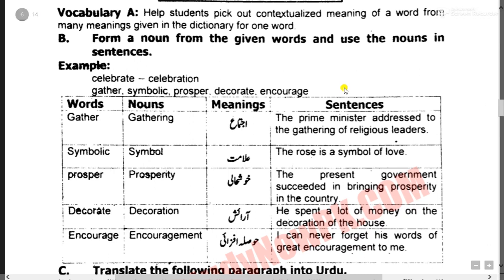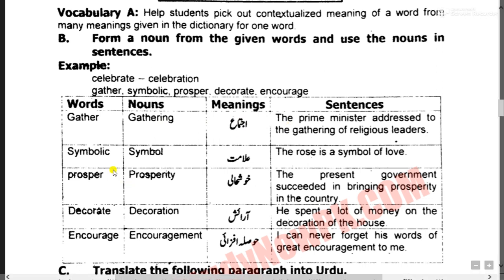آگے یہ کہہ رہا ہے: form a noun for the given words and use the nouns in sentences. جو یہ words دیے گئے ہیں، انہیں nouns میں کرنا ہے اور sentences میں لانا ہے۔ جیسے کہ gathering ہے - The prime minister addressed the gathering of religious leaders. Symbolic ہے، اسے symbol بول سکتے ہیں - علامت۔ The rose is a symbol of love.